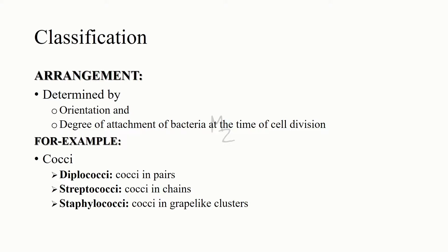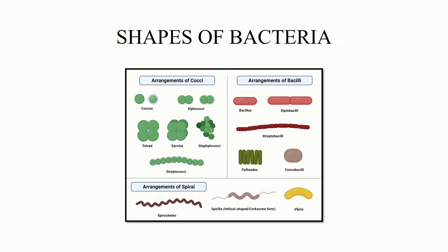Arrangement of bacteria is determined by the orientation and the degree of attachment of bacteria at the time of cell division. For example, certain cocci occur in pairs, so they are termed as diplococci, while some in chains, they are termed as streptococci, and others in grape-like clusters, so they are termed as staphylococci.